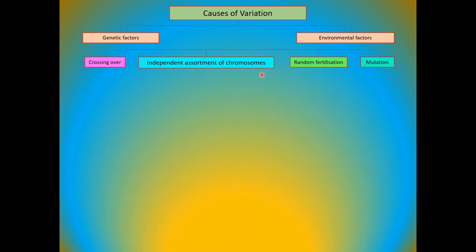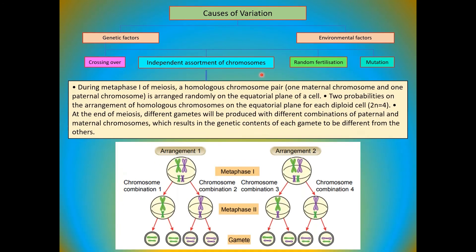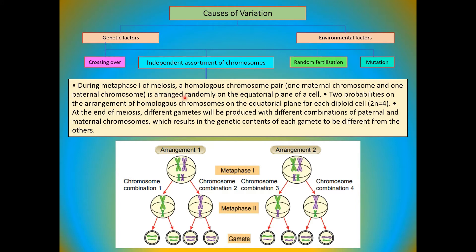Factor number two: independent assortments of chromosomes. During metaphase 1 of meiosis, a homologous chromosome pair — one maternal chromosome and one paternal chromosome — is arranged randomly on the equatorial plane of a cell. There are two possible arrangements of homologous chromosomes on the equatorial plane for each diploid cell. At the end of meiosis, different gametes are produced with different combinations of paternal and maternal chromosomes, resulting in each gamete having different genetic content.